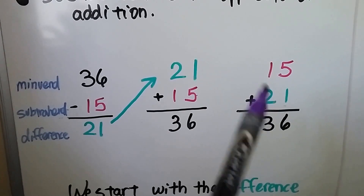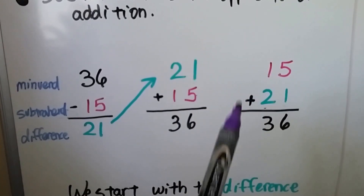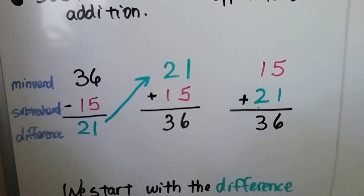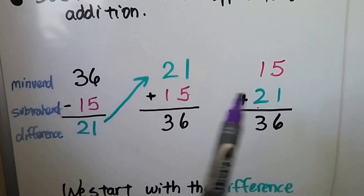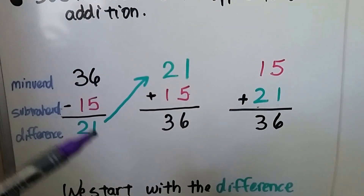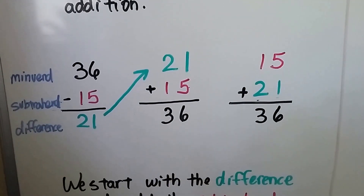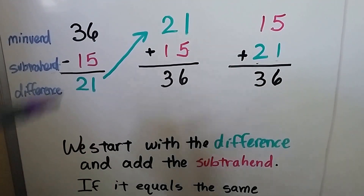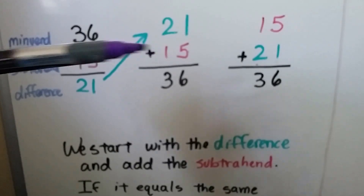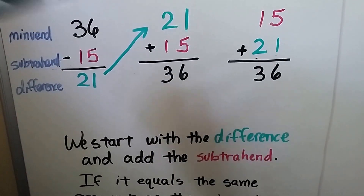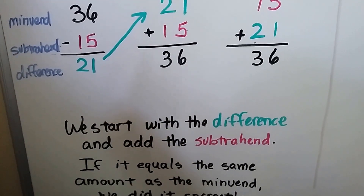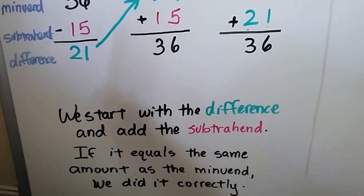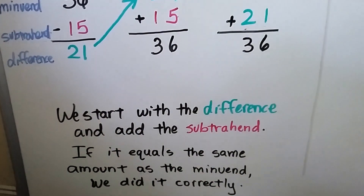And it doesn't matter which order we add them in. The commutative property says that we can add them in either order. It's just important to subtract them in the correct order. We start with the difference and we add the subtrahend 15. If it equals the same amount as the minuend — 36 — then we know we did it correctly.